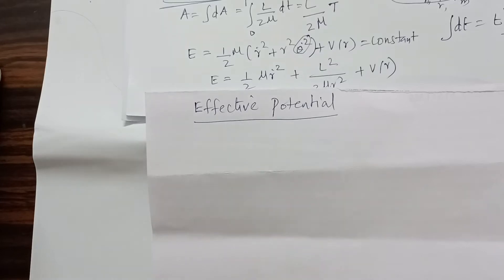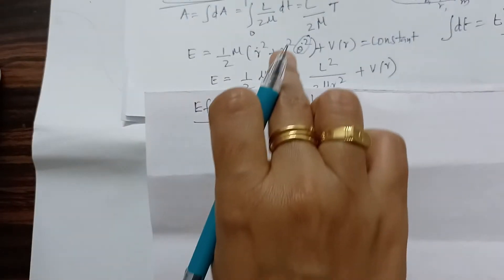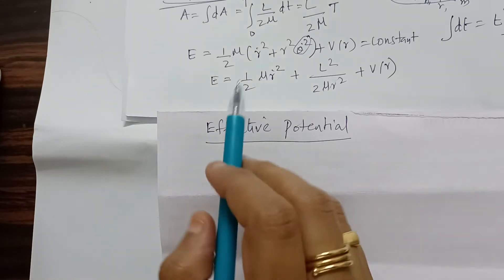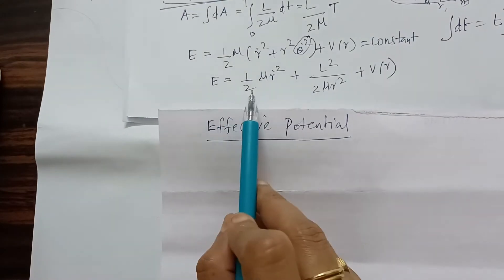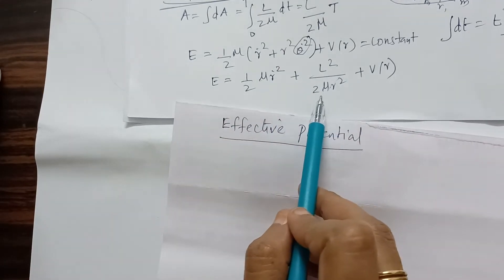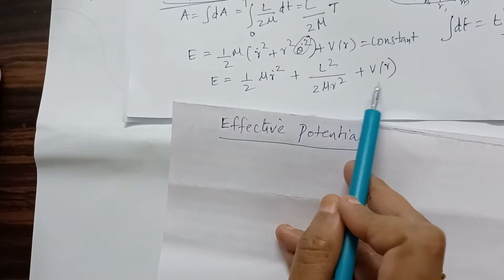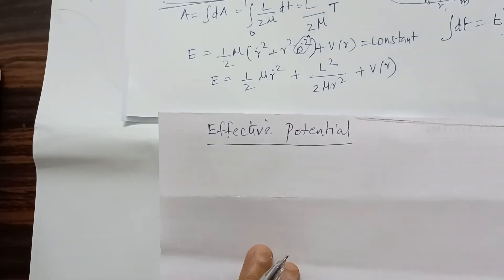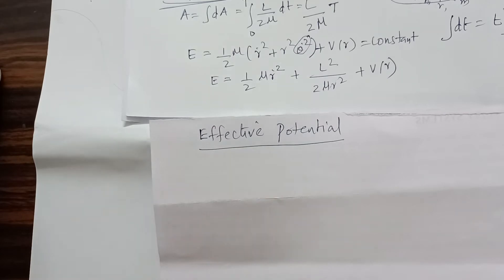In the last video we discussed the general properties of central force motion and arrived at the equation using the first integrals of motion: θ̇ = L / (μR²). We have seen that E = ½μṘ² + L² / (2μR²) + V(R). Central forces conserve the total energy of the system.